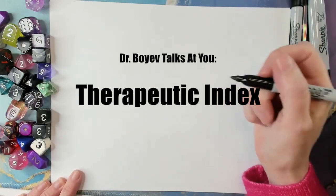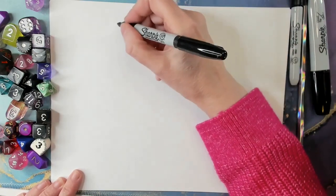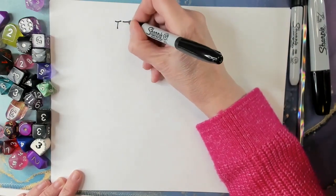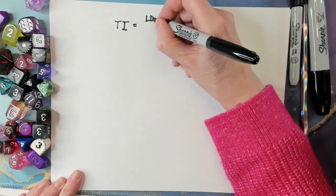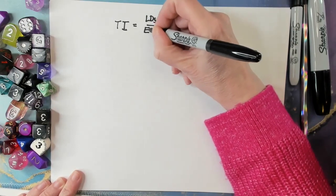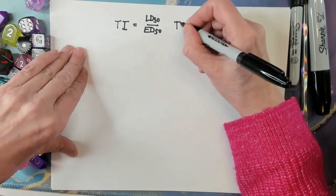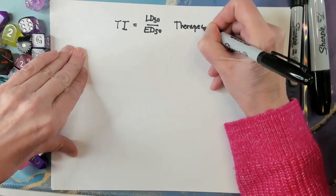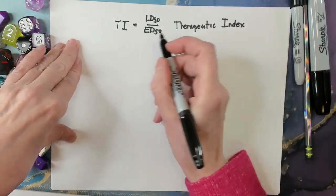What I see happening a lot is that students memorize this equation: therapeutic index equals LD50 over ED50. They memorize that for the test and think they're good to go. Well, the problem is that no one is ever going to ask you to calculate that number.